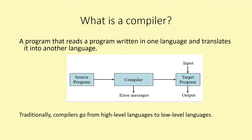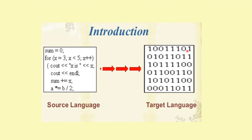The compiler is a language translator. It converts the program in one language into another language. It also produces an error message and generates code. The compiler converts high-level language into low-level language.